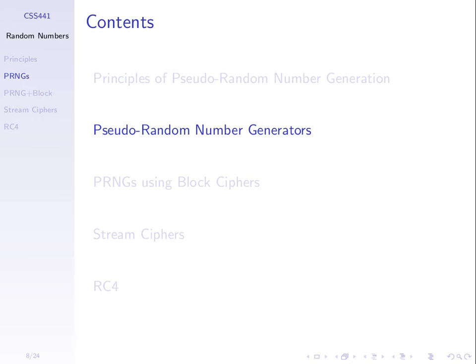We distinguish between true random number generators and pseudo-random number generators. A true generator uses some external source — measurements from the environment, such as noise, radiation levels, or vibration of components on a computer. These are considered sources of true randomness. The problem is they don't generate many bits per second. We often need thousands of bits of randomness, so we have algorithms that take some initial seed value and generate a sequence of bits close to a true random sequence — a pseudo-random sequence, generated by a PRNG.